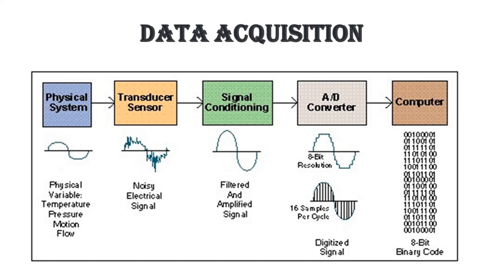As the name suggests, DCS has three main qualities. The first is the distribution of various control functions into relatively small sets of subsystems which are semi-autonomous and interconnected through a high-speed communication bus. Some of these functions include data acquisition, data presentation, process control, process data acquisition, reporting, and information storing and retrieval.